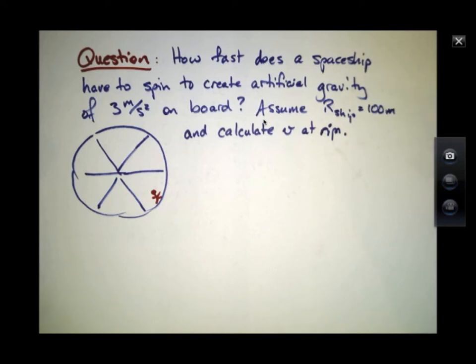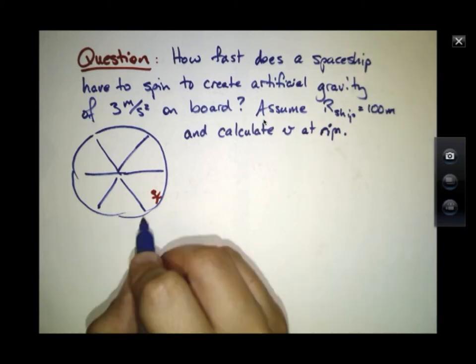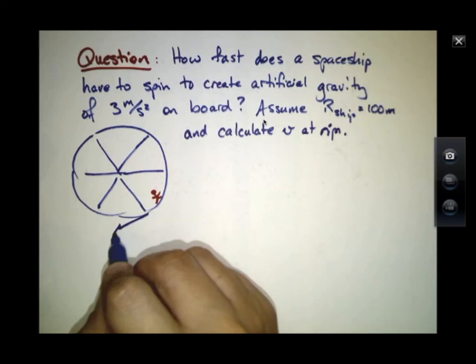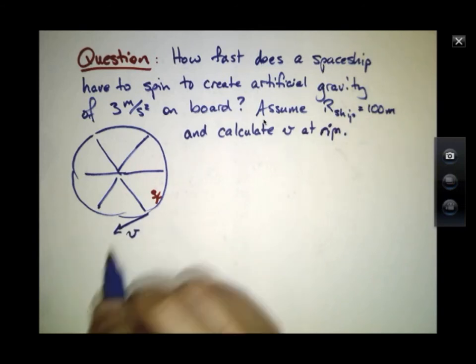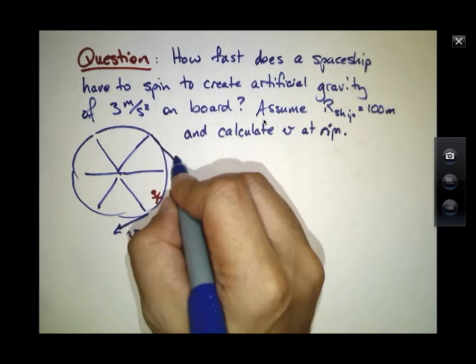One of the more clever ideas for how to create an artificial gravity is to actually make your spaceship spin. In other words, have each point of the rim move around with some speed v.